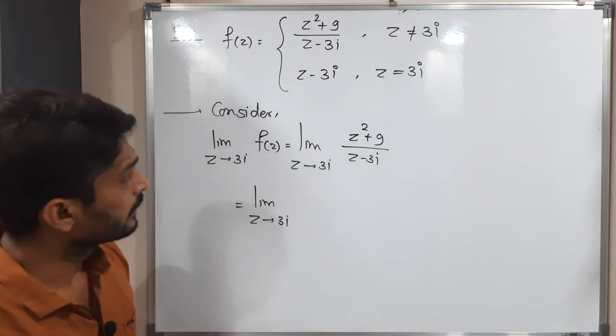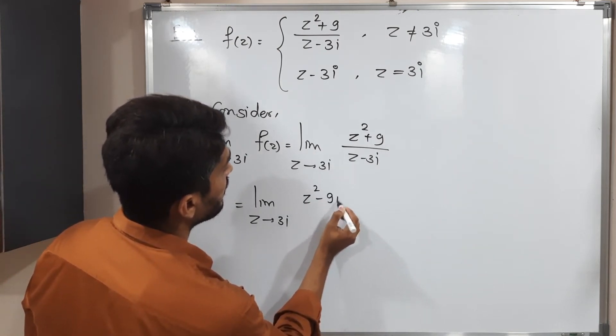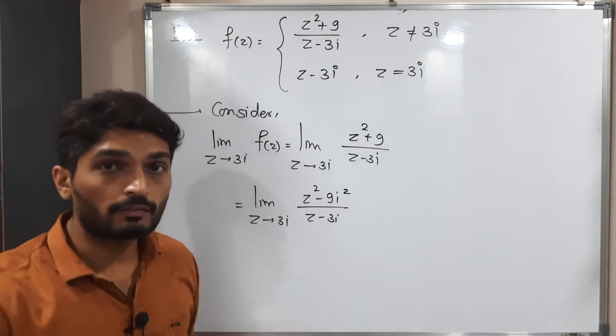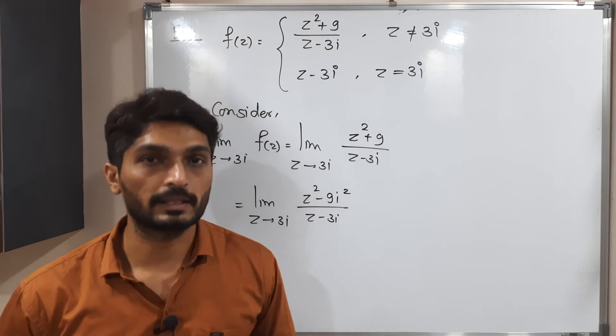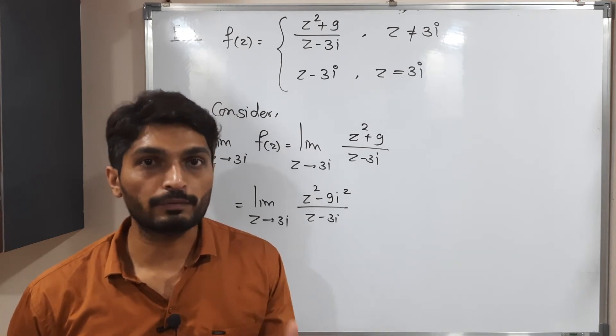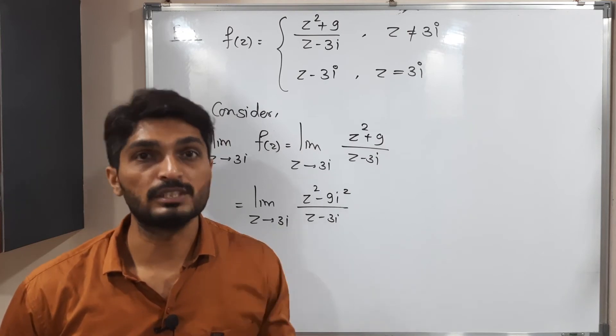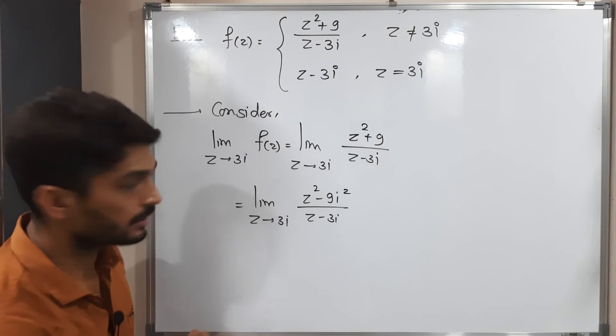What can we do here? Yeah, we can do one thing. That means z square minus 9i square, we can write. Since you know the value of i square is minus 1, minus minus plus, we will have, so plus 9 we will have again. After that, what we need to do? You are familiar with the formula, a square minus b square. That is a plus b, a minus b. That formula we can use here.